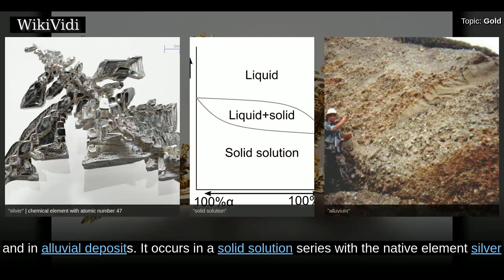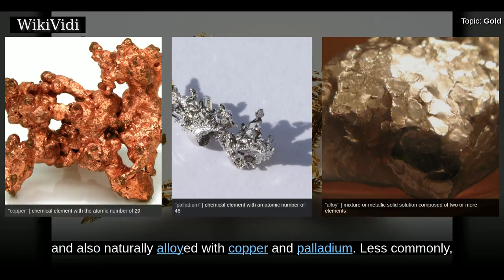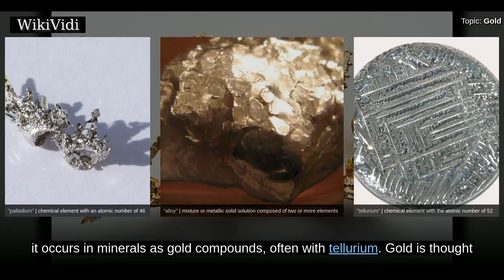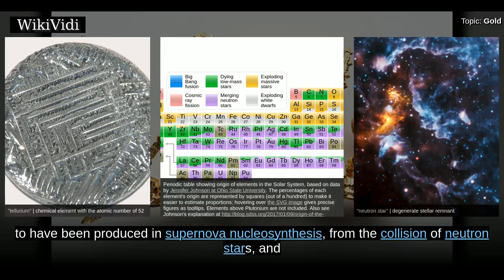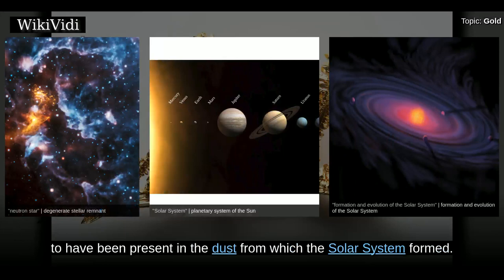It occurs in a solid solution series with the native element silver and also naturally alloyed with copper and palladium. Less commonly, it occurs in minerals as gold compounds, often with tellurium. Gold is thought to have been produced in supernova nucleosynthesis from the collision of neutron stars and to have been present in the dust from which the solar system formed.